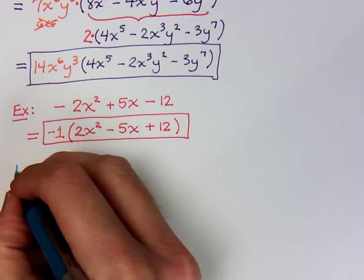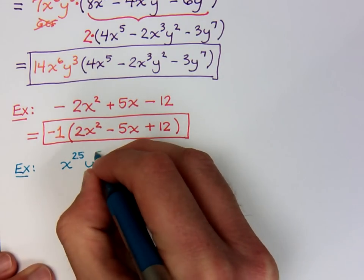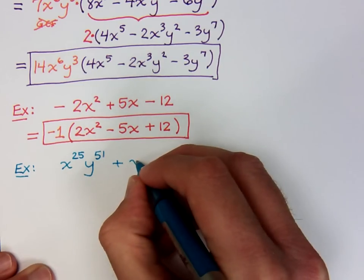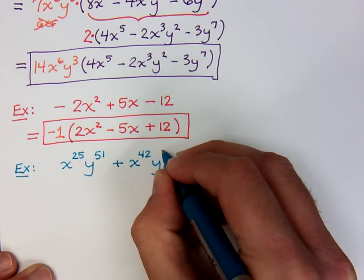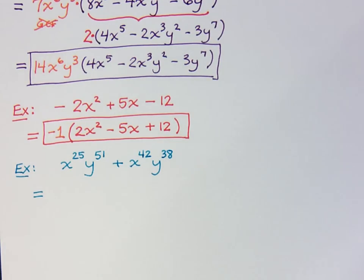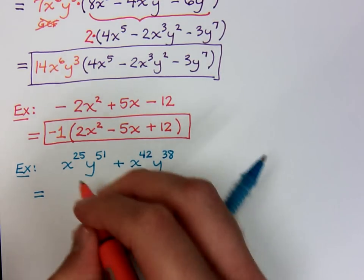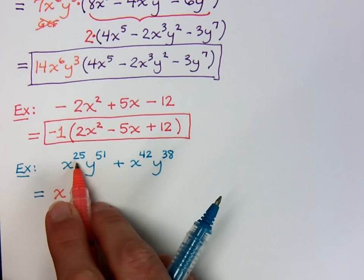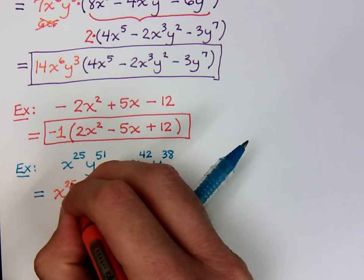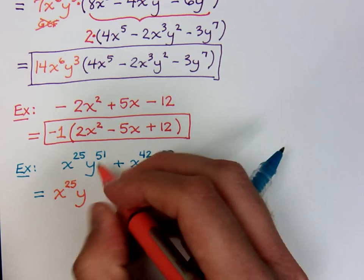Alright, let's try something else. For some reason, my students have severe difficulties when handling a problem like this. x to the twenty-fifth, y to the fifty-first, plus x to the forty-second, y to the thirty-eighth. I mean, it seems simple enough. You just have two terms. They both have x's and y's. It's going to be about determining what is that greatest common factor. Well, in terms of the coefficients, they're just one, so the common factor of one doesn't really help us out. But notice that they both contain x. And as we've already talked about, the amount of x that you can pull out of everybody is limited by the smallest number, in this case the twenty-five.